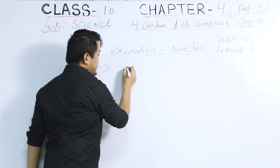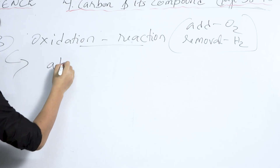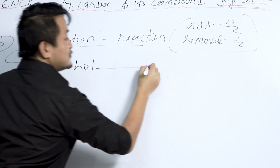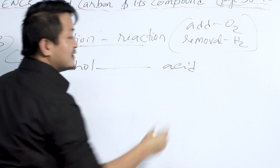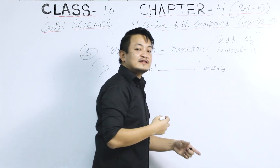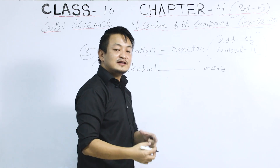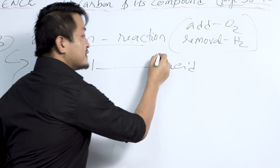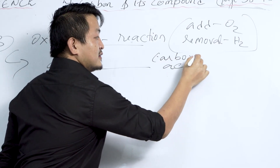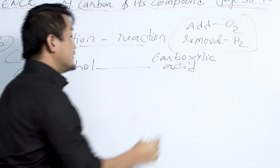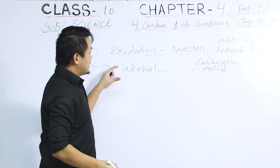Under oxidation reaction for carbon, one important thing to remember is that there will be a conversion of alcohol to acid — specifically, carboxylic acid, which is what we are discussing in this chapter.